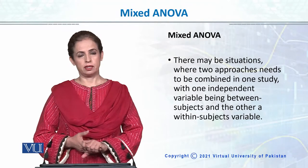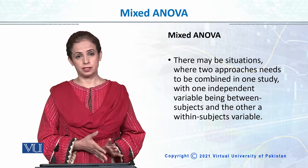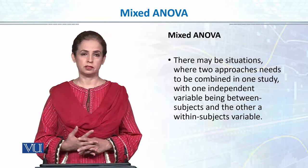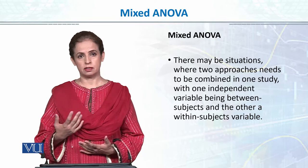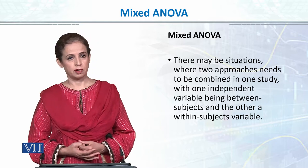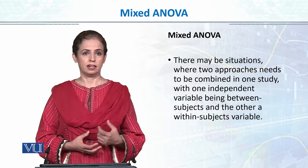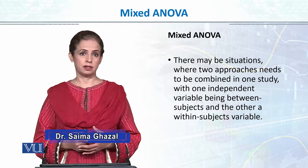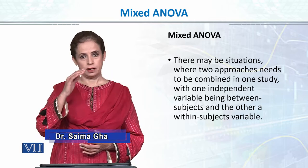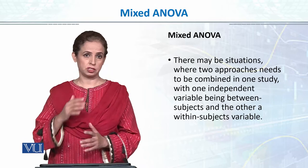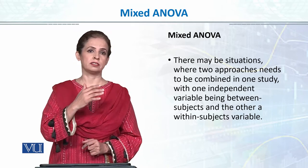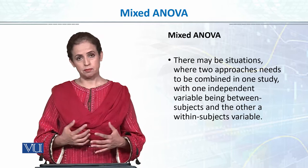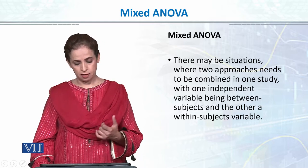We did a two-way independent sample ANOVA and a two-way repeated measure ANOVA, but there are many conditions and real-world problems when we have both variables — an independent level variable and a repeated level measurement. For example, if I want to see gender differences across three different treatment interventions for depression, the three interventions would be repeated, but gender would be an independent or between-group variable. So there may be many situations where we combine the independent variable as well as the within-subject variable.